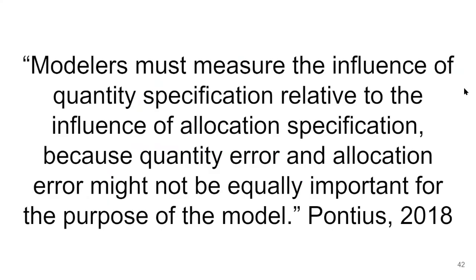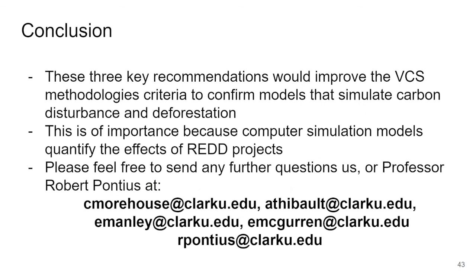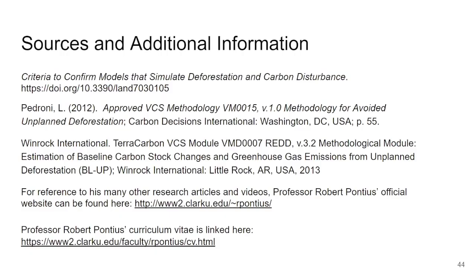Thus, according to Pontius 2018, modelers must measure the influence of quantity specification relative to the influence of allocation specification, because quantity error and allocation error might not be equally important for the model's purpose. Leaf graphs can measure this relative influence. These three key recommendations would improve the VCS methodology's criteria to confirm models that simulate carbon disturbance and deforestation — important because computer simulation models quantify the effects of REDD projects. Please feel free to send questions to us or our advisors. Thank you, and we hope these recommendations can create positive change towards a new methodology that evaluates models that simulate deforestation.